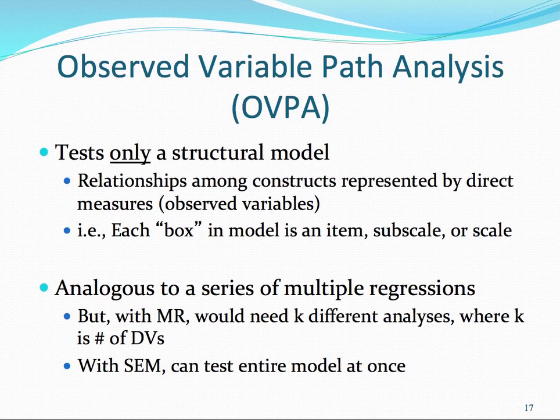Once we run our measurement model and deem that we have a good-fitting measurement model, we then proceed to structural models or path analysis. We have two types of path analyses. The first is observed variable path analysis, which tests only a structural model and looks at the relationships among the constructs.